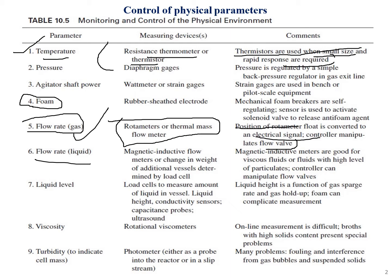The sixth point is flow rate for liquid. This is measured with the help of magnetic inductive flow meters, or by change in weight of additional vessels determined by a load cell. Magnetic inductive meters are good for viscous fluids or fluids with a high level of particulates.